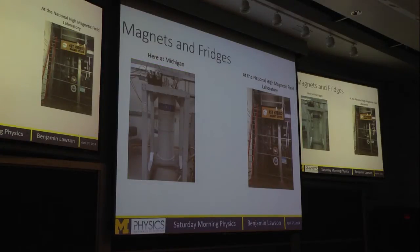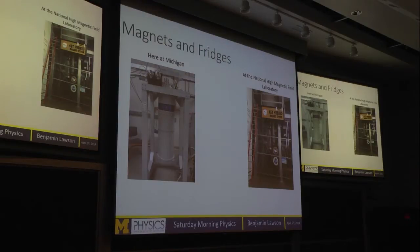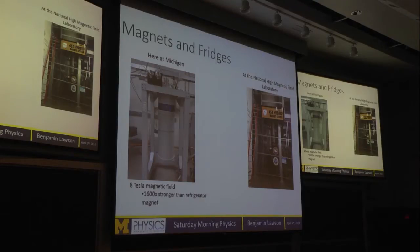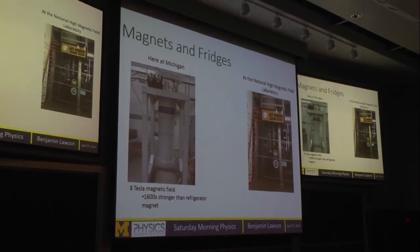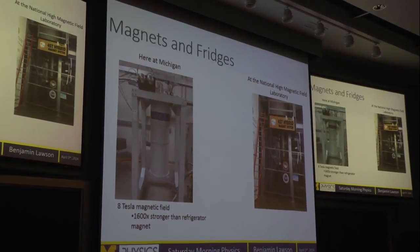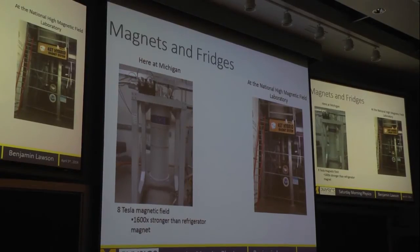To study these quantum properties we have to go to really extreme environments — really cold temperatures and really high magnetic fields. Here I have a picture of a machine in our lab at Michigan. This cylinder is a refrigerator and a magnet all built into one. It has a magnetic field of 8 tesla — that's 1,600 times stronger than the magnets on your refrigerator. And it has a base temperature of 0.01 Kelvin.